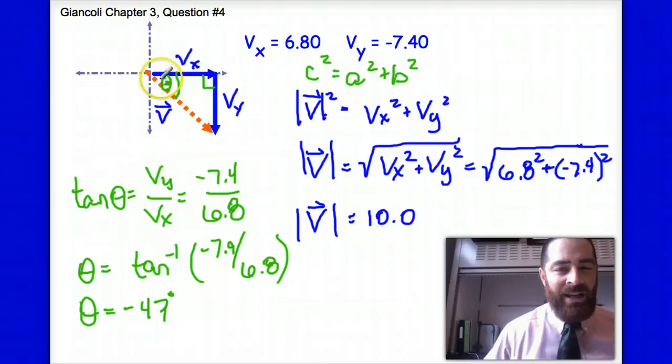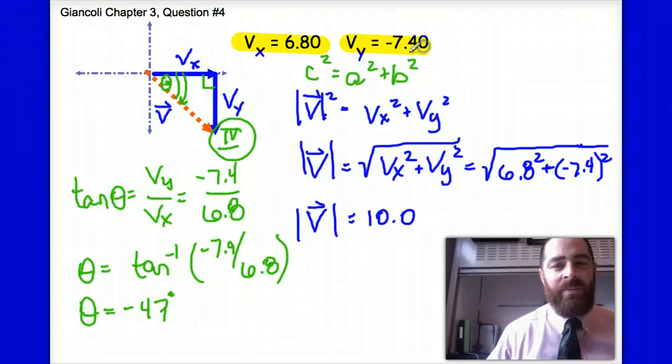When I do my kind of quick idiot check here, I say yeah, you know what, 47 degrees is below the positive x-axis. It is in the fourth quadrant, and that's what I'm expecting to see with these two vector components, 6.8 of vx here and negative 7.4.